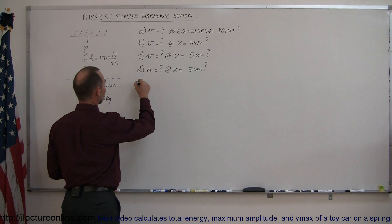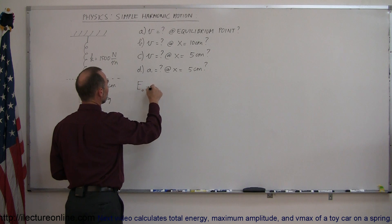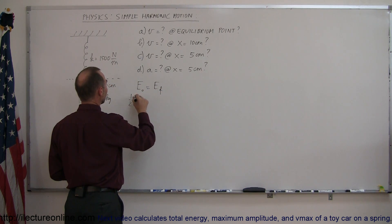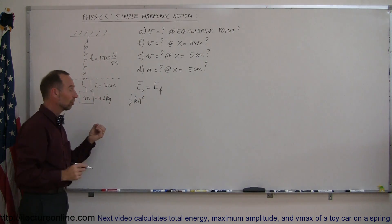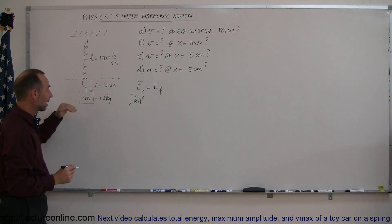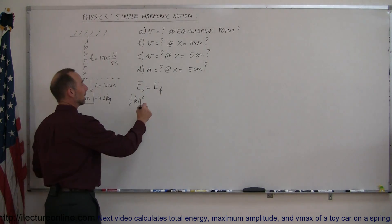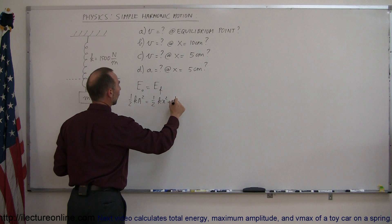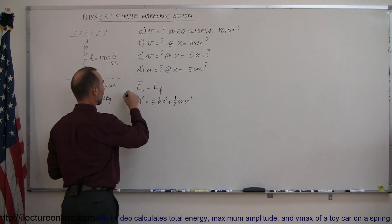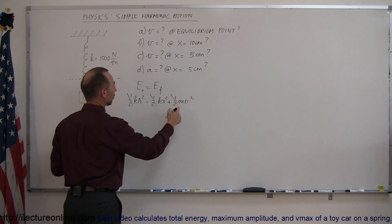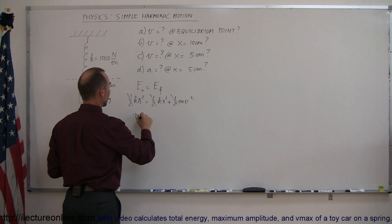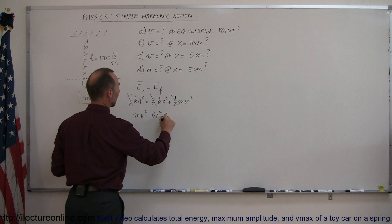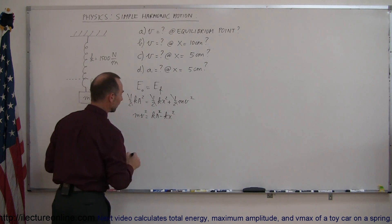We start by saying energy initial equals energy final. That means one-half k·a² — the potential energy put into the system when you elongate the spring to its maximum amplitude — equals one-half k·x² plus one-half m·v². We can get rid of all the one-halves, solving for m·v²: m·v² = k·a² − k·x².